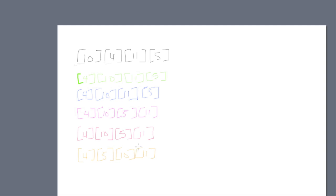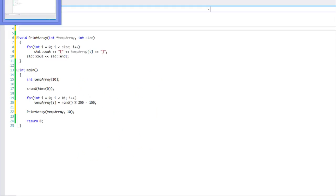And voilà, our array is sorted. In the code it will still check to see if further swaps are needed and continue, but as you can see the array is fully sorted. That's exactly how it works, and we're going to apply this to C++ code — though you can apply it to whatever language you're using.